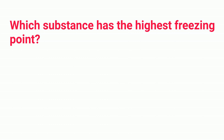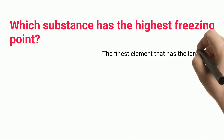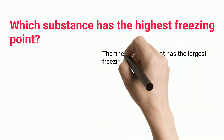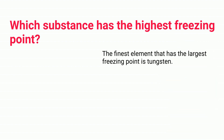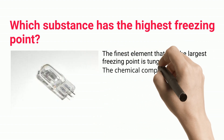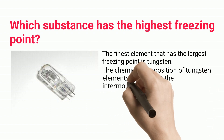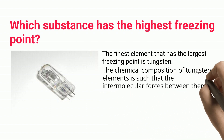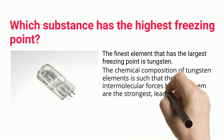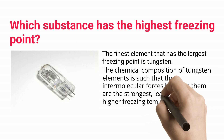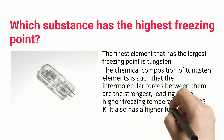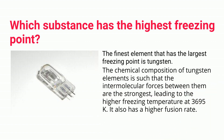The element that has the largest freezing point is tungsten. The chemical composition of tungsten is such that the intermolecular forces between its atoms are the strongest, leading to a higher freezing temperature of 3695 K. It also has a higher fusion rate.